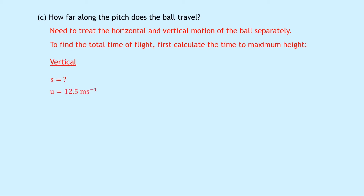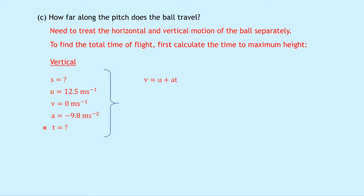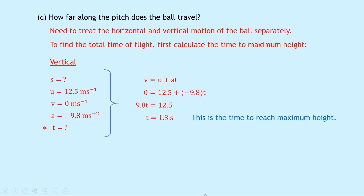Considering the vertical motion: s is unknown; u is 12.5 meters per second (the vertical component from part a); the final vertical velocity v is 0 meters per second at maximum height; acceleration a is minus 9.8 meters per second squared (taking upwards as positive); and time t is what we're finding. Using v equals u plus at: 0 equals 12.5 plus (minus 9.8)t, so 9.8t equals 12.5, giving t equals 1.3 seconds.